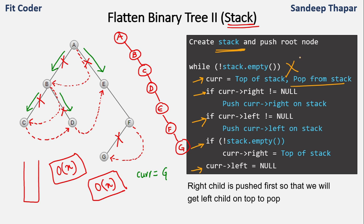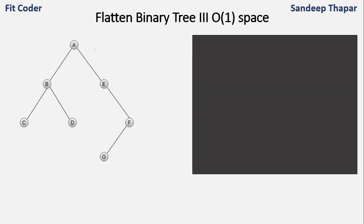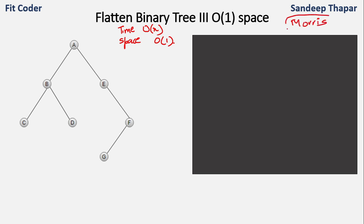Now let's see the third method, in which we do not use recursion and we do not use a stack. The time complexity is O(n) and the space complexity is O(1). You will find this quite similar to the Morris order traversal discussed earlier. We keep a variable 'current' which we initially point to the root node.